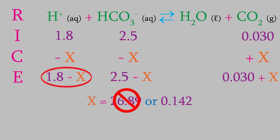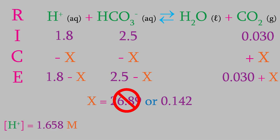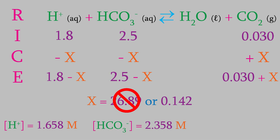That will always happen when you solve the quadratic formula for a rice table in our class — one of the two values you get for x will give you an impossible result for the concentration, so you can discard that value of x. Using 0.142 for x, we find out that the equilibrium concentrations are 1.658 molar for hydrogen, 2.358 molar for the bicarbonate ion, and 0.172 molar for carbon dioxide.